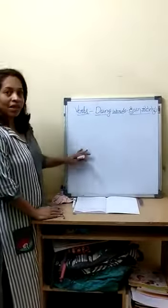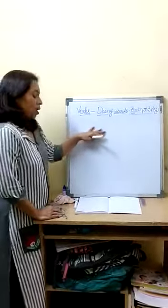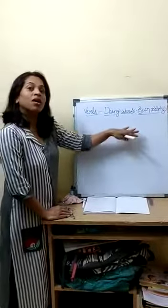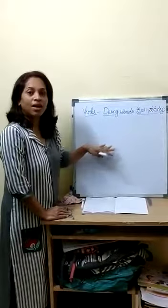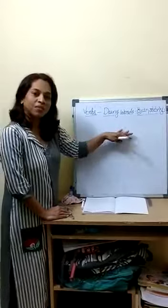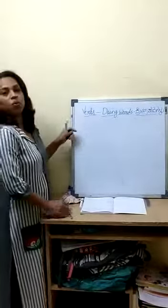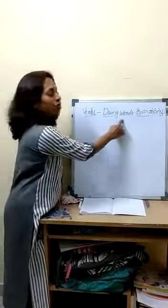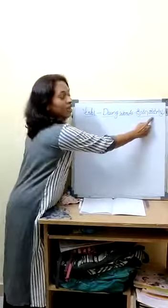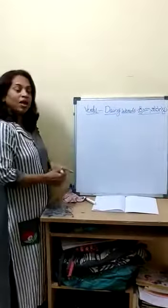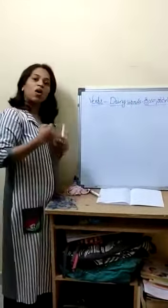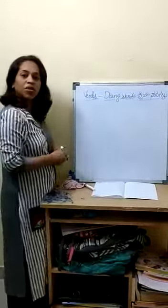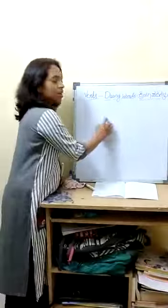Children, we saw the examples — Arun dances, Sita sings, Ravi was running. These were examples of verbs. What is a verb? Verb is a doing word. In Kannada we call it Kriyapadagalu. Now we will see it in a sentence and we will all together circle the verbs.